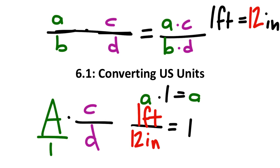This can seem confusing — anything divided by itself is one — but once we realize that one foot and 12 inches represent the same value, just shown differently, it clicks. Just like proportions look different but have the same value. One foot in terms of value is the same as 12 inches. Would you rather have one foot of bubble gum or 12 inches? It's the same thing.